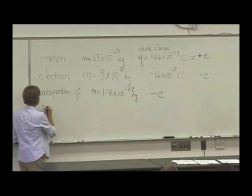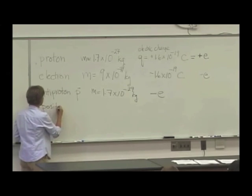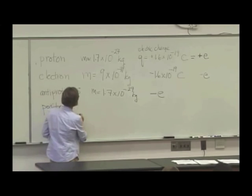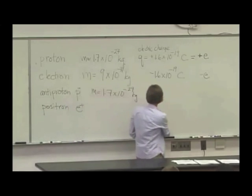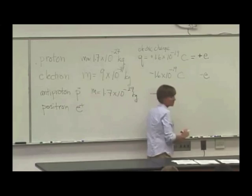There's also the positron, which is an antielectron. And its mass is the same as the mass of the electron, but it has a charge of plus E.